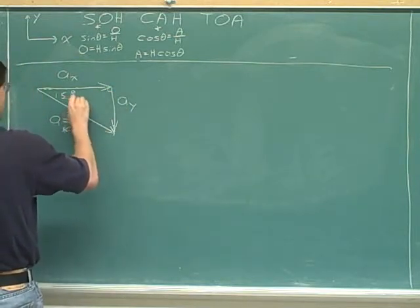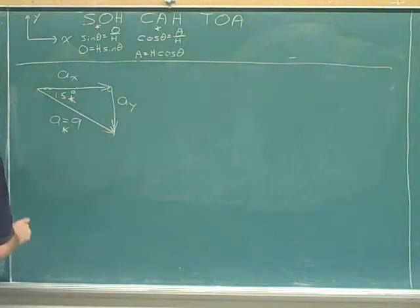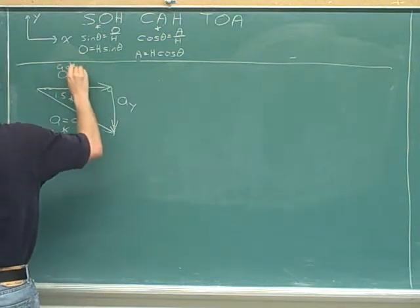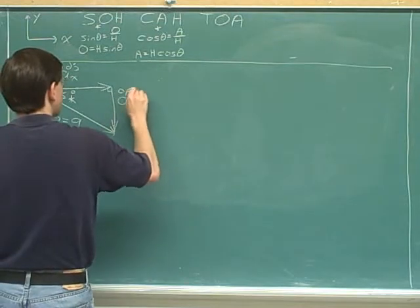Here's the side we were given. Here's the angle we were given. And we can label hypotenuse, adjacent, and opposite sides.